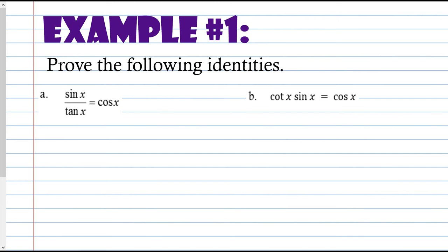Example one: prove the following identities. You should have done this in pre-calculus. The basic idea is to make the left side look like the right side. So I'm going to start manipulating sine x over tangent x and try to simplify it so that it equals cosine x. Tangent equals sine over cosine, so I'm going to work with that first. Sine of x divided by tangent of x is the same as sine of x multiplied by 1 over tangent x.